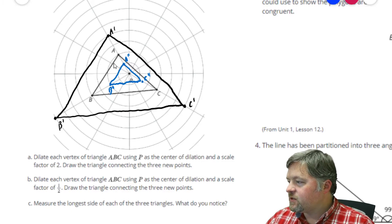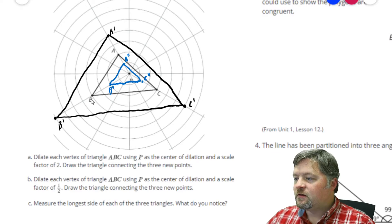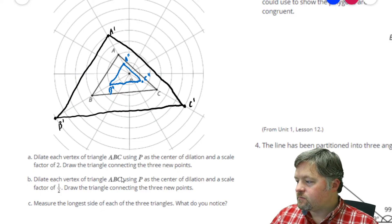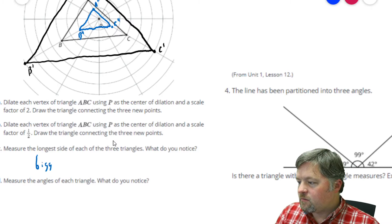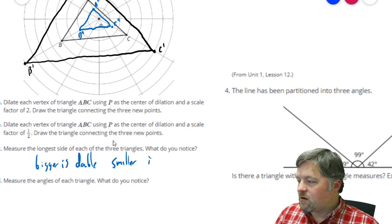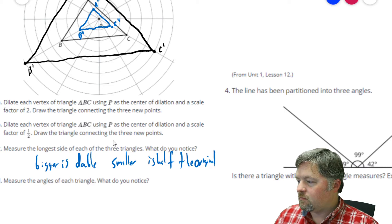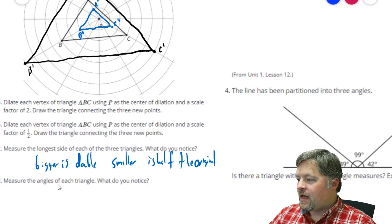Measure the longest side of each of these three triangles. This distance, this distance, this distance. Going from this one to the longest one will be double. From this one to the shortest one will be half. So, what do we notice? Bigger is double. Smaller is half. Half of the original.